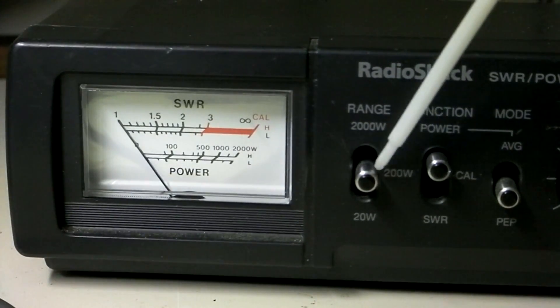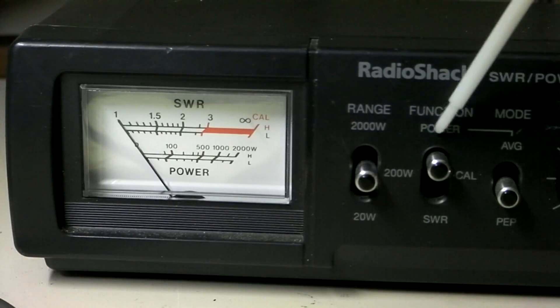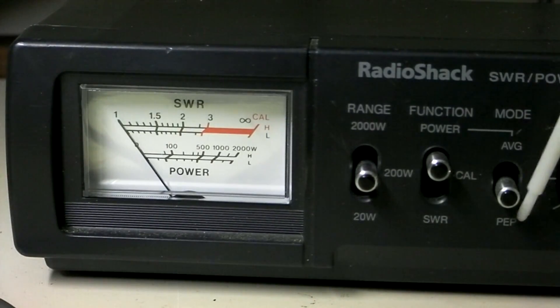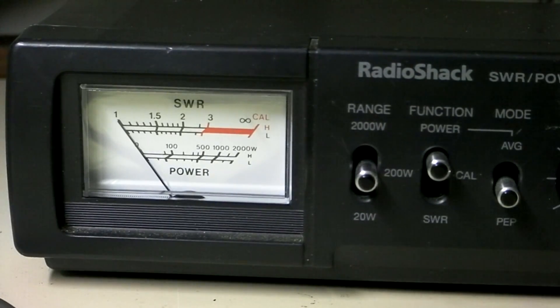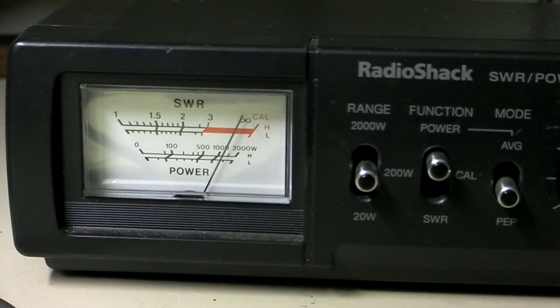But basically, we have it set to the 200 watt range. We're in our power mode, and we're in our peak average meeting. Now, this is not a powered meter, so it would not be called an active peak reading meter.